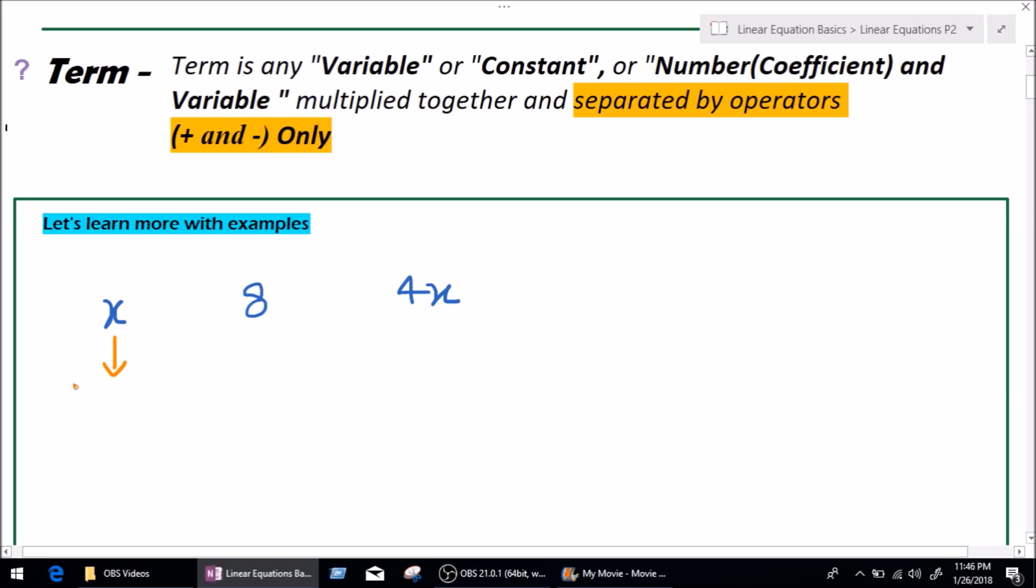So, x is a variable. Let's just write down really quick, x is a variable. Now, in the definition, it says term is any variable. So, if x is a variable, this variable can also be called as a term.